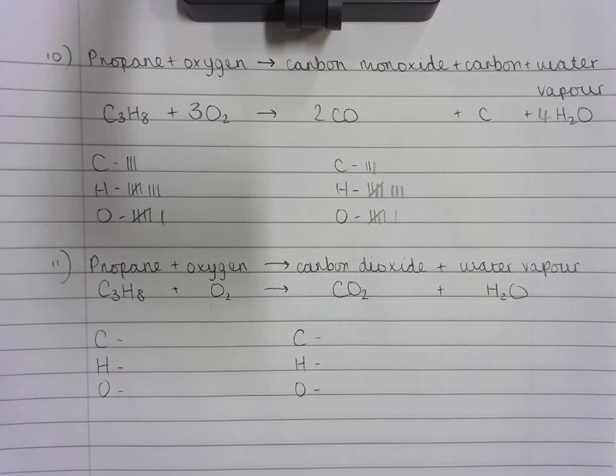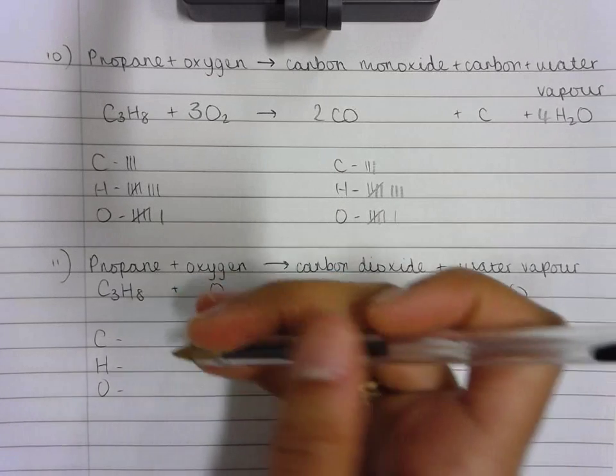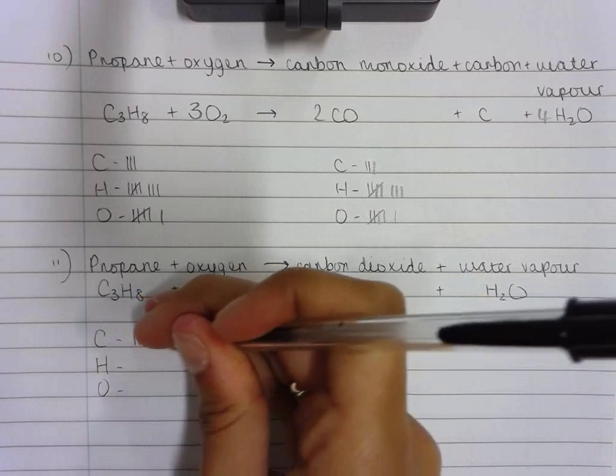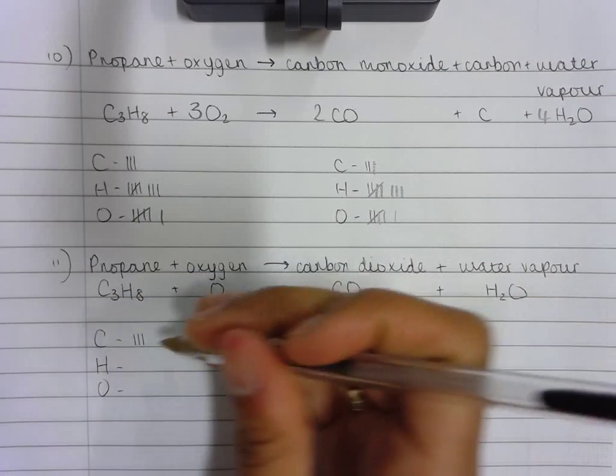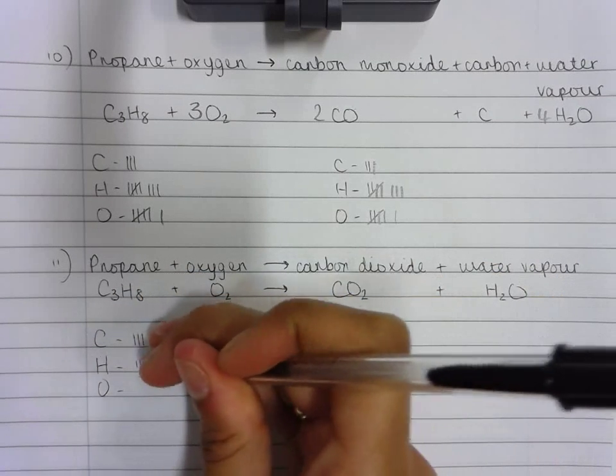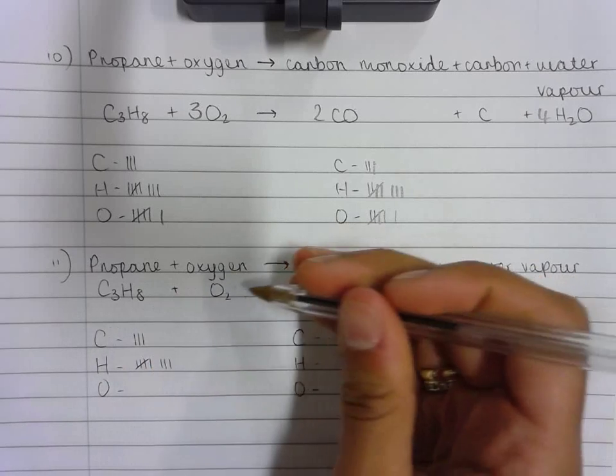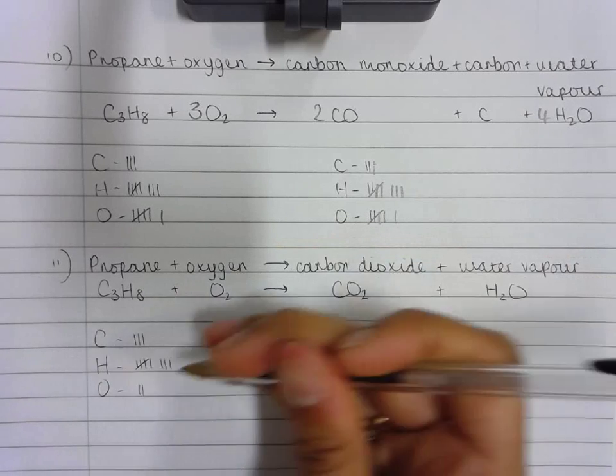Now I need to count the number of atoms of each element that reacts on the reactant and product side in pen by tallying. So there are three carbon atoms - one, two, three - eight hydrogen atoms - one, two, three, four, five, six, seven, eight - and two oxygen atoms - one, two.